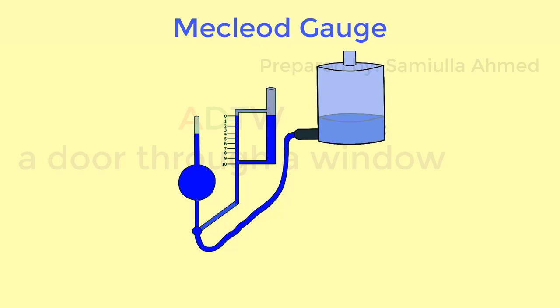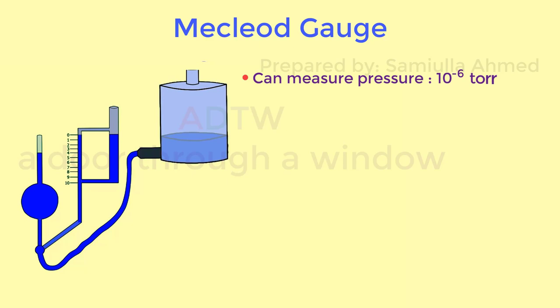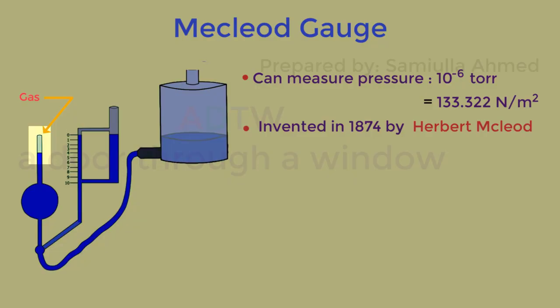A McLeod pressure gauge, also known as a compression gauge, is an instrument used for vacuum measurement by compressing the low pressure gas whose pressure is to be measured. It can measure pressure down to 10 raised to minus 6 torr, which equals 133.322 Newton per meter square. It was invented in 1874 by Herbert McLeod.